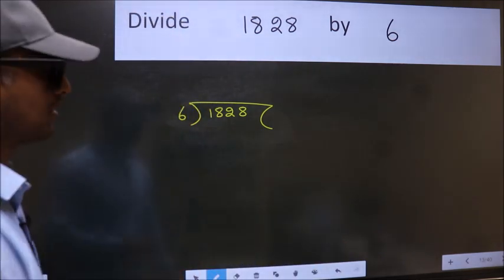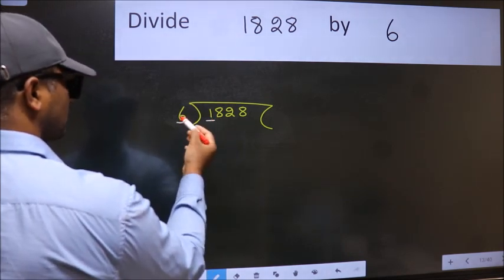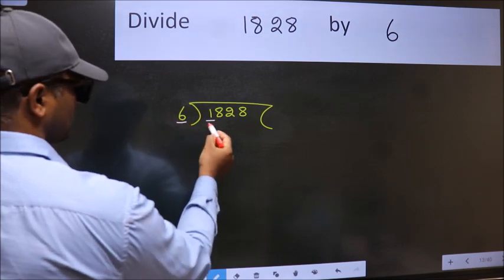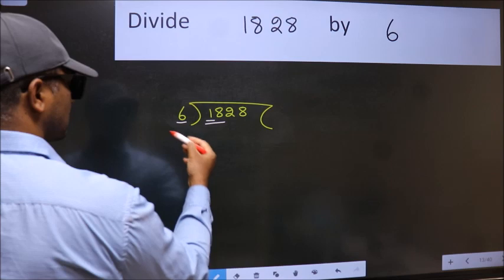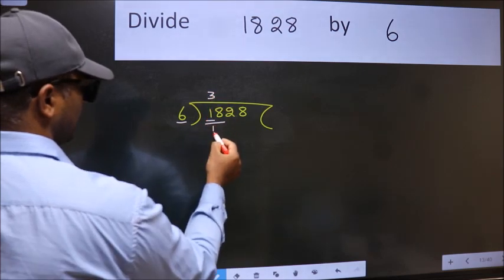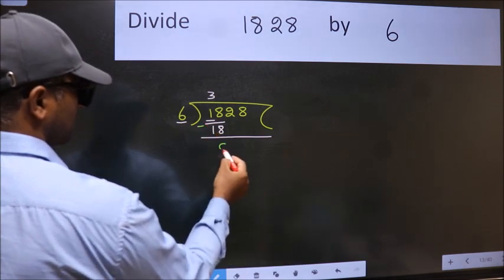Next, here we have 1 and here 6. 1 is smaller than 6. So, we should take two numbers, 18. When do we get 18 in 6 table? 6 times 3 is 18. Now, we should subtract. We get 0.